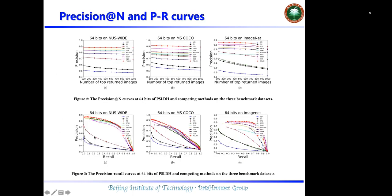Moreover, this is the result for Precision@N WMAP. The first three images show the results of our Precision@N WMAP metrics, and the red lines are the results of all proposed methods.